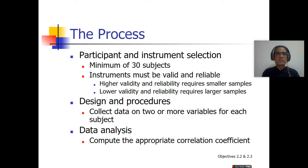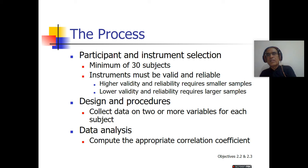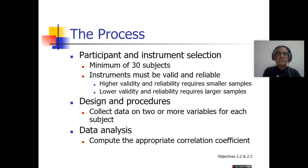We discuss design and procedures of correlation research. In correlation research, we collect data on two or more variables for each subject, and after that we analyze the data. We compute the appropriate correlation coefficient. For this purpose, we use different types of software like SPSS, which stands for Statistical Package for Social Sciences. We can also use R statistics, and there are many other software available for data analysis.